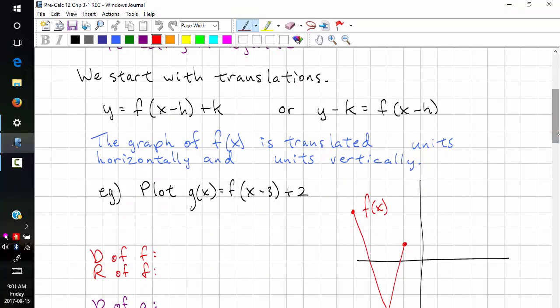If we're looking at just translations, we have y equals f of x minus h plus k, and the workbook likes to use this form: y minus k equals f of x minus h. Either way you answer it on the test is fine. This is what we call an explicit equation. This is called an implicit equation.